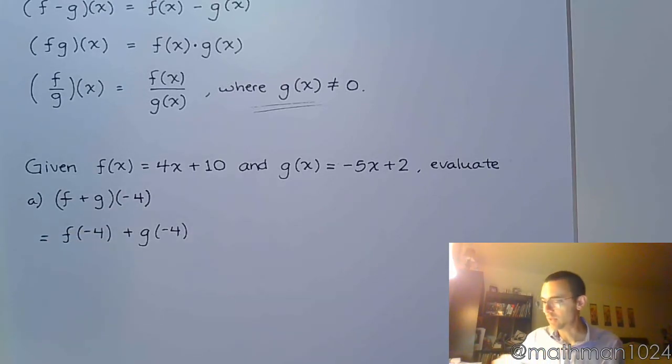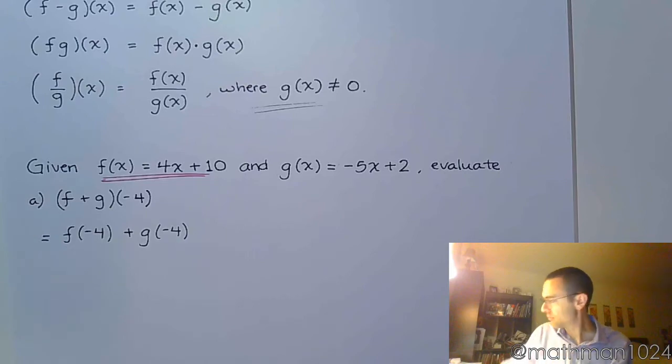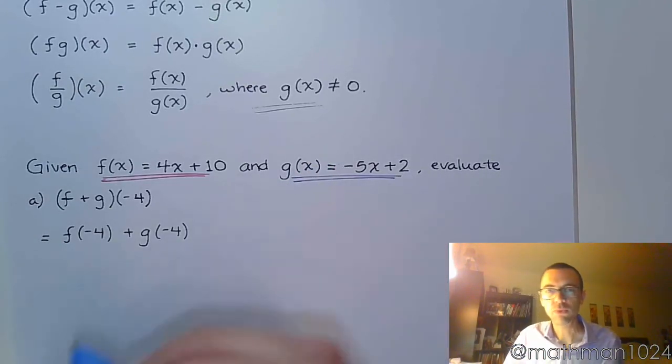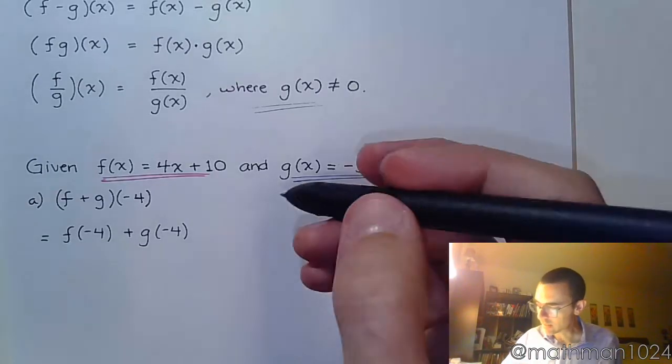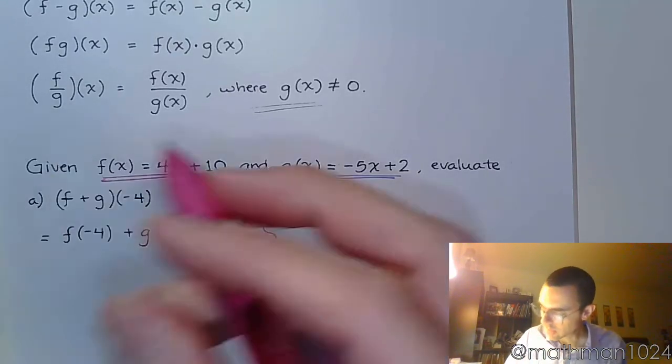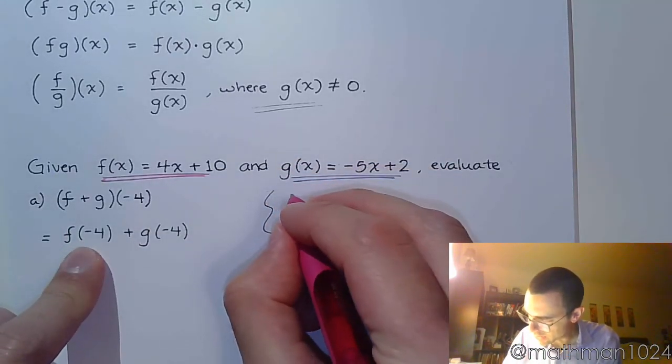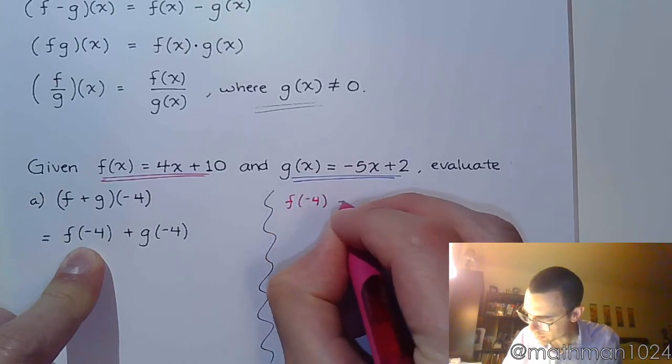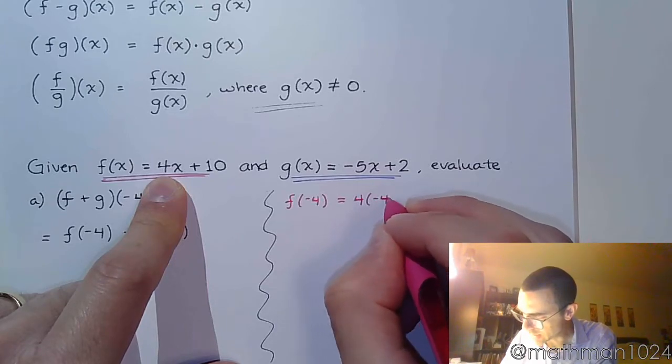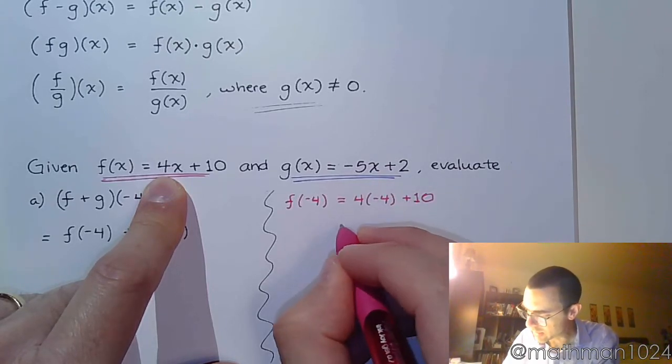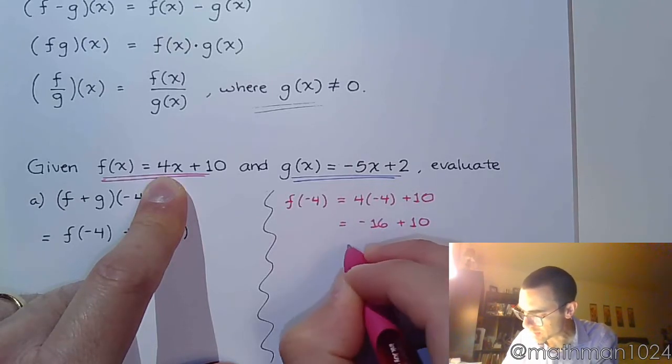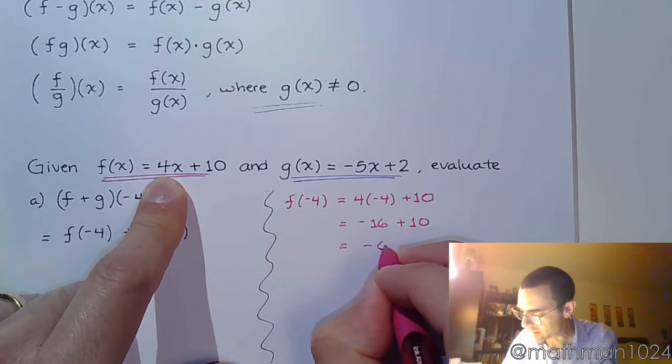So I like to color code things. I'm going to be using pink for f, and I'm going to be using this lovely blue color here for g. So off to the side, I'm going to work out each of these. I need to figure out f(-4). So f(-4), here I go right here, so that's 4 times -4 plus 10. Do the arithmetic, -16 + 10, and I get -6.